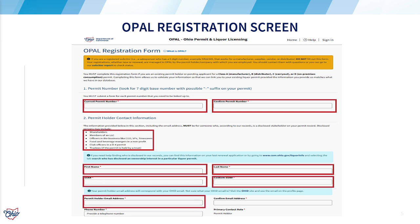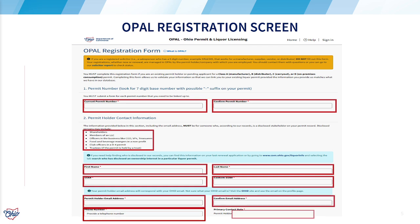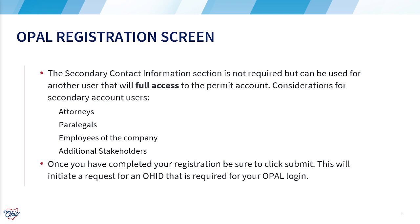Be sure to verify your information to avoid delays in processing your registration request. OPAL allows for a secondary contact. A secondary contact is not required. However, this individual will have full access to your OPAL account and the division may request power of attorney for this addition.